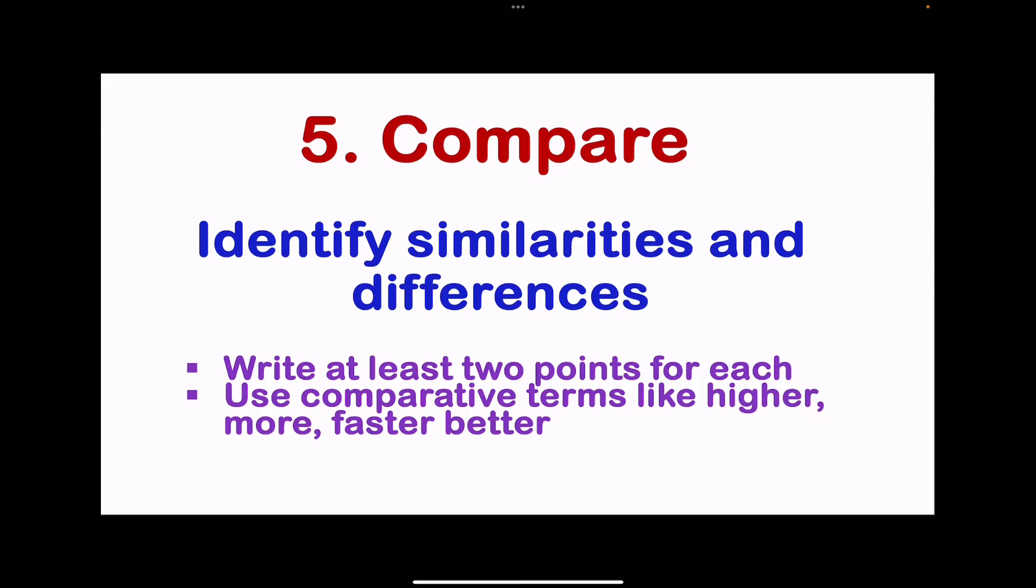The next command word is compare. We are identifying similarities as well as differences. Depending on the marks awarded, you can write as many points as you want. But for three mark questions, you need to write at least two for each because sometimes they can give two marks to the differences and one mark to the similarities or two marks to the similarities and one mark to the differences. Make sure at least if it's a three mark question, write two points for each. And remember to use comparative terms like higher, more, faster, better, and so on.